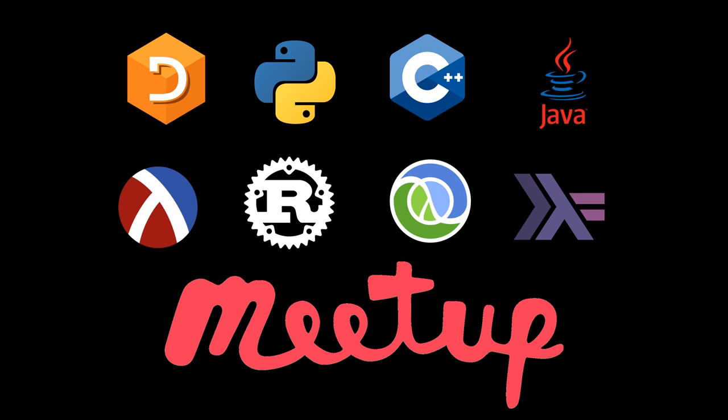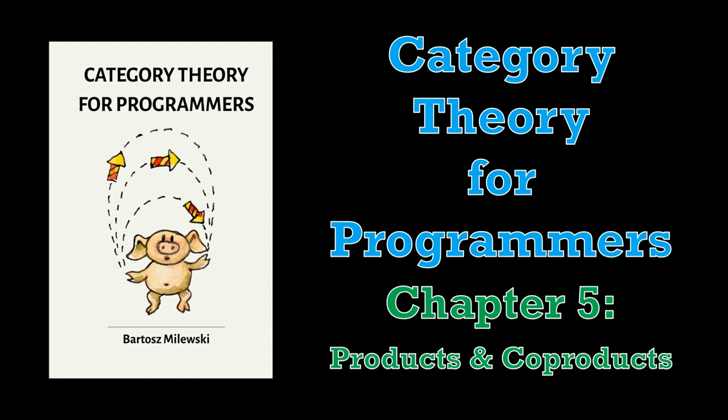Welcome to a Programming Languages virtual meetup post-recording. My name is Connor Hookstra, and in today's video we're going to be covering Chapter 5 of Category Theory for Programmers by Bartosz Milewski, which is entitled Products and Co-Products.